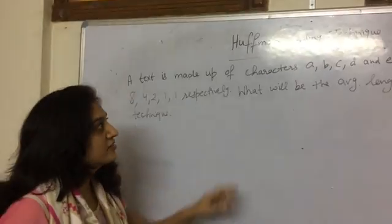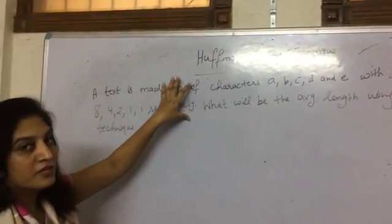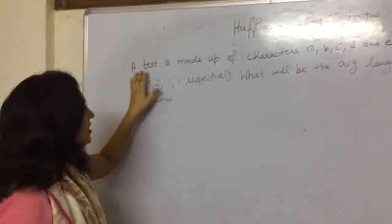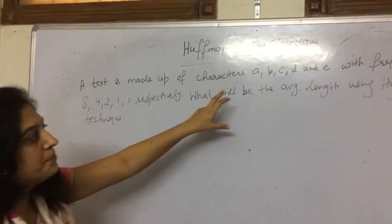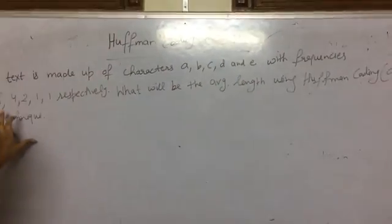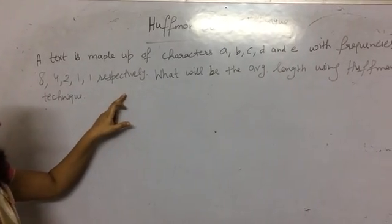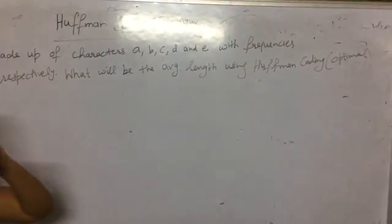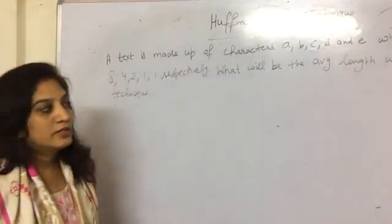Hi, our topic is Huffman coding technique. Let's start with this example of Huffman coding technique. A text is made up of characters A, B, C, D, and E with frequencies 8, 4, 2, 1, 1 respectively. What will be the average length using Huffman coding technique? First of all, what is Huffman coding technique?